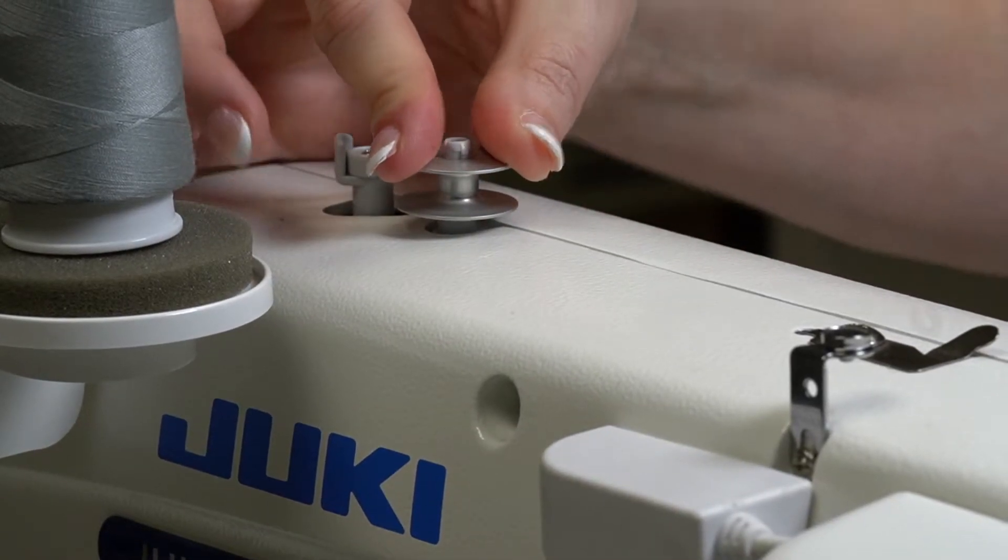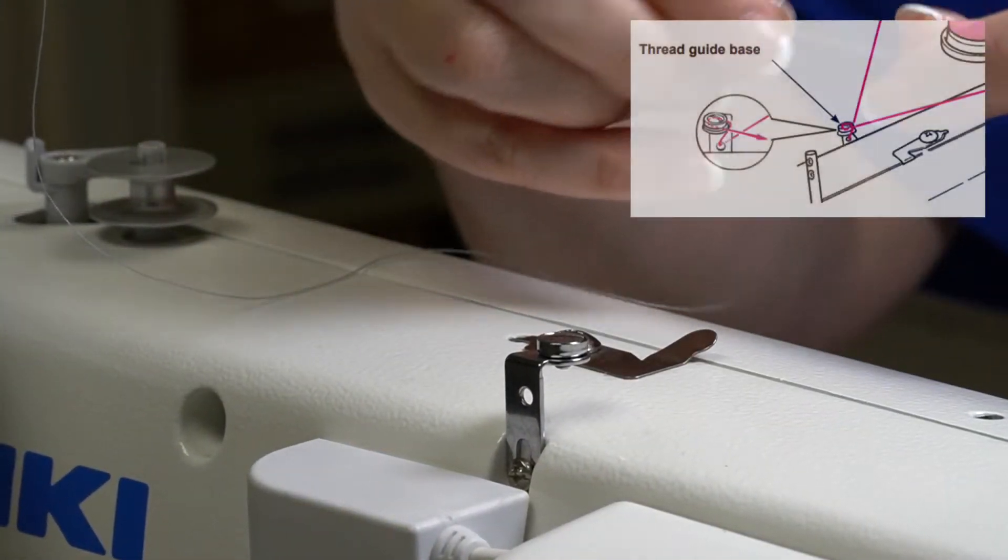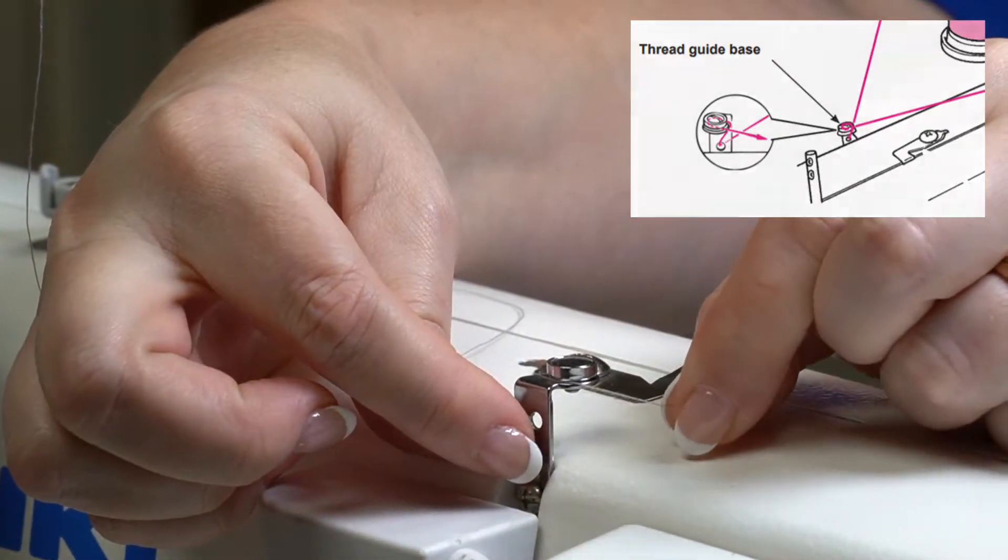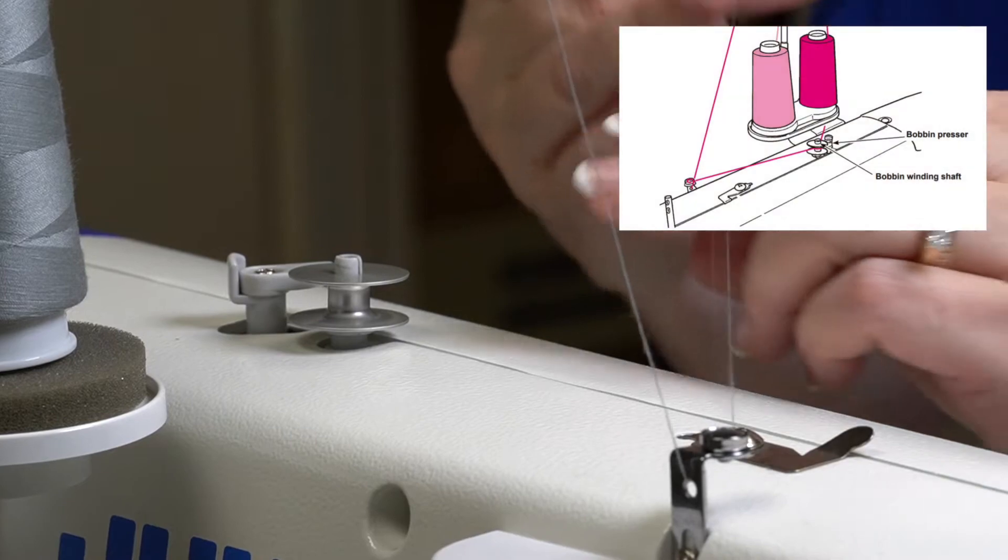Place the bobbin on the bobbin winding shaft. Pass the thread through the hole on the back of the thread guide base, then bring the thread up and around the disc on the top of the base.